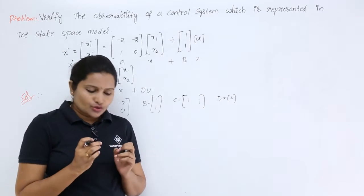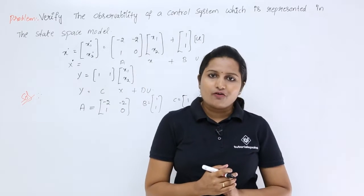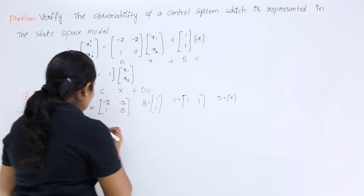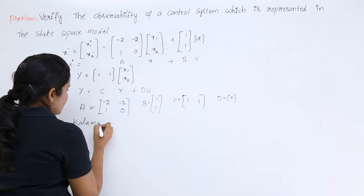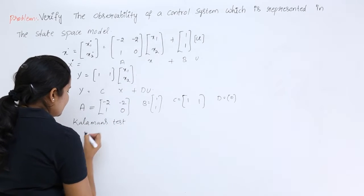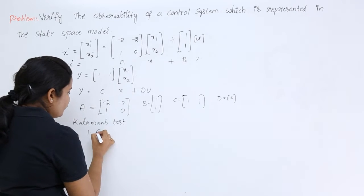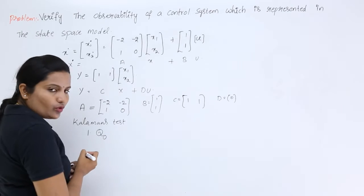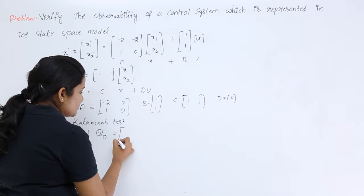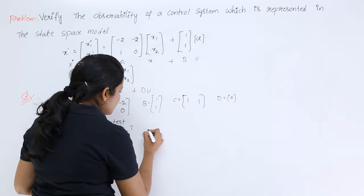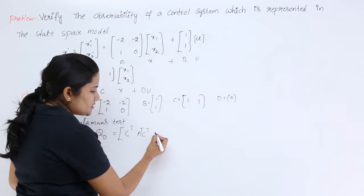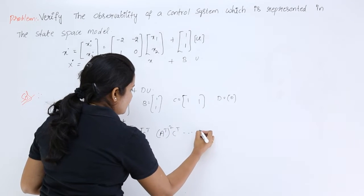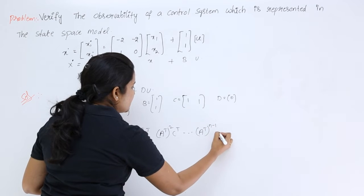To verify the observability of a control system, we need to follow a test called Kalman's test. This test has two steps. The first step is to form a matrix generally called the observability matrix Q_O, using the equation: [C^T, A^T·C^T, (A^T)^2·C^T, ..., (A^T)^(n-1)·C^T].